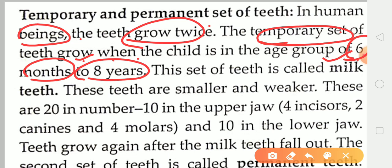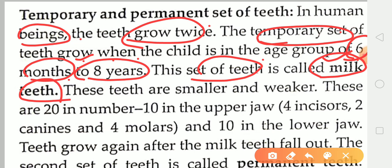This set of teeth is called the milk teeth. These teeth are smaller and weaker. There are 20 in number — 10 in the upper jaw and 10 in the lower jaw.